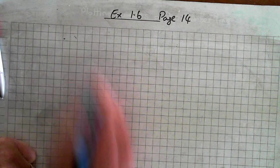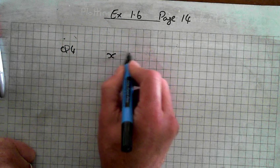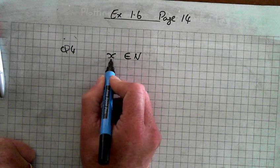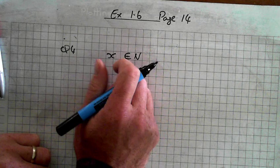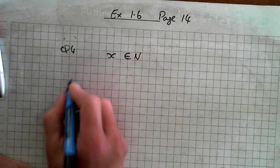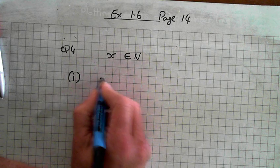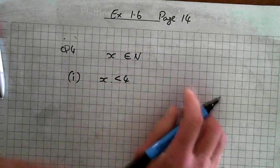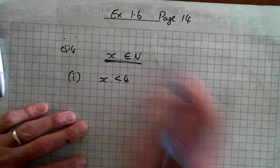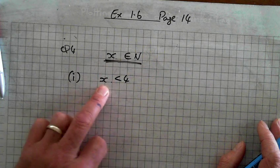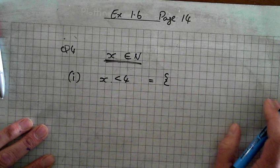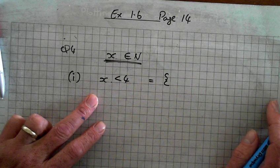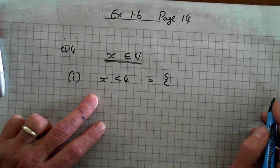We'll go on to question 4. In question 4, at the beginning it says X is an element of N — what does that mean? All the answers are natural numbers. State the values X may have. For part I, X is less than 4, and all the answers are natural numbers. This is another way of stating the answers — we could draw a number line.